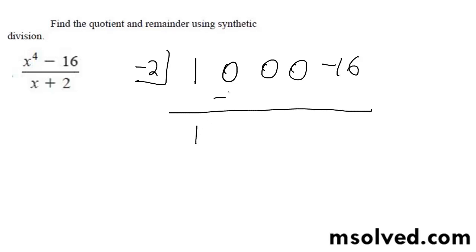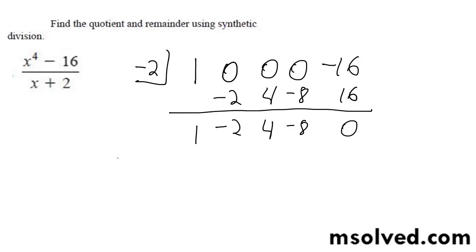Alright, so I get 1, this becomes negative 2, negative 2, this becomes 4. Let's bring this down, so I get negative 8, this becomes 16, this is 0. So my leftover after dividing that by x plus 2 is going to be x cubed minus 2x squared plus 4x minus 8. That's it.